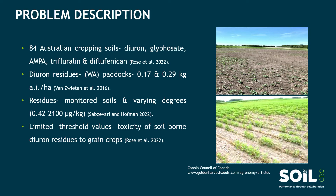Moreover, a recent meta-analysis indicated that diuron herbicide residue was detected in various monitored soils with varied degrees from 0.42 to 2,100 microgram per kilogram. So diuron herbicide could persist in the soil from weeks to over a year, so its residue can cause subtle damage to rotational crops.